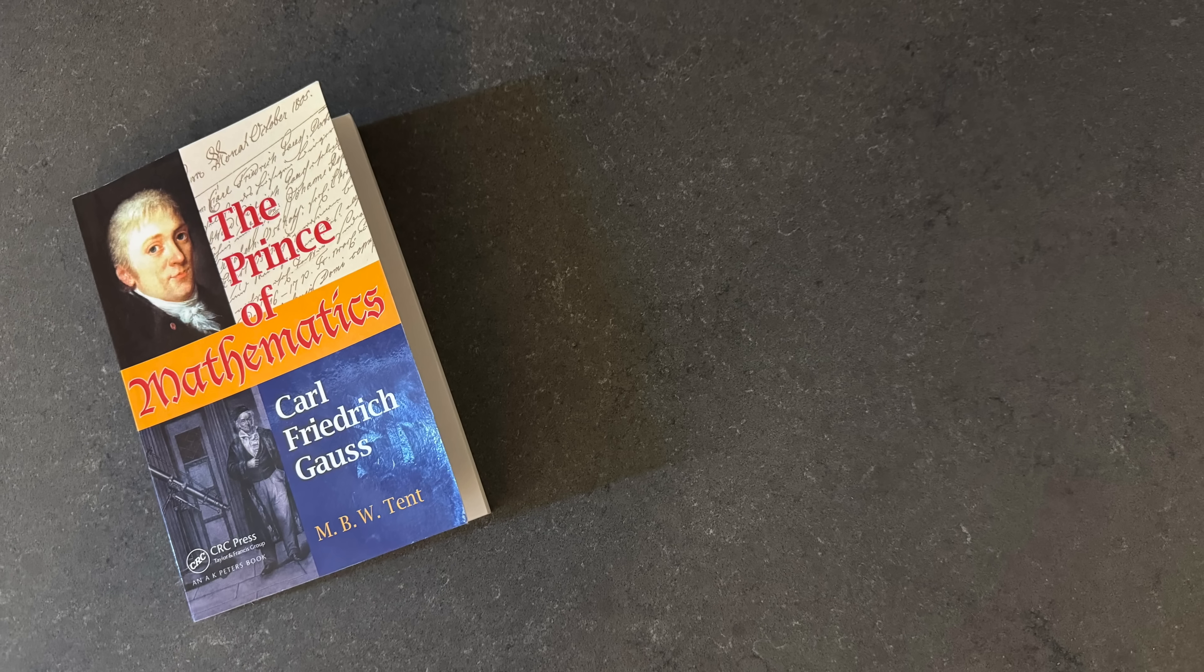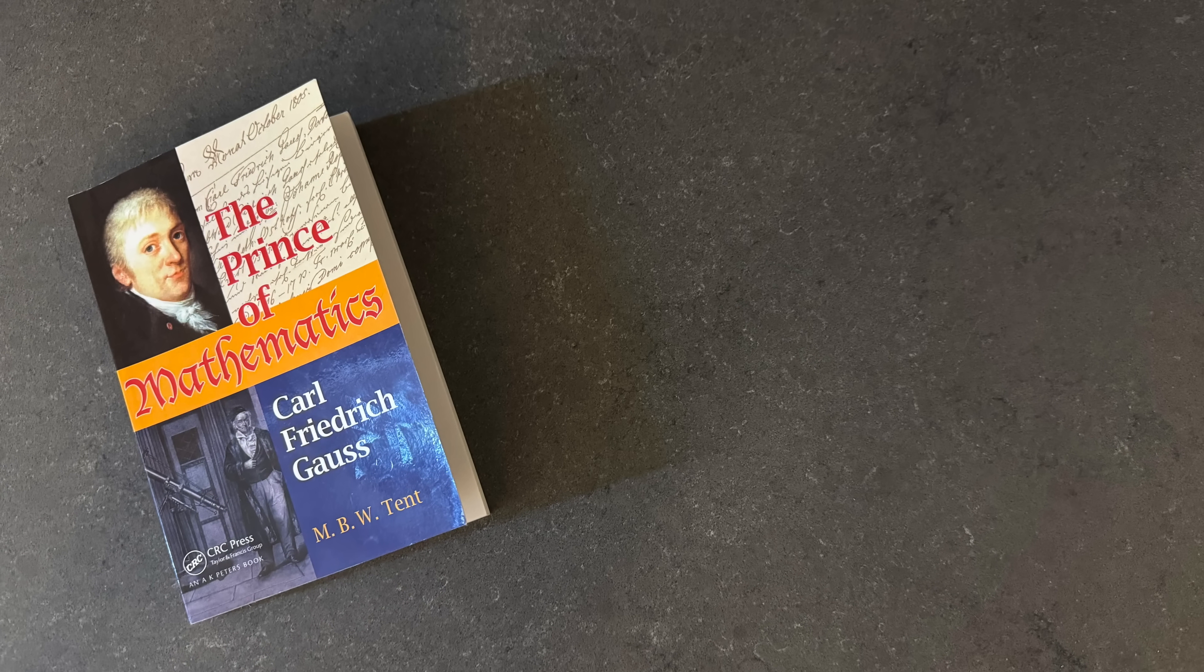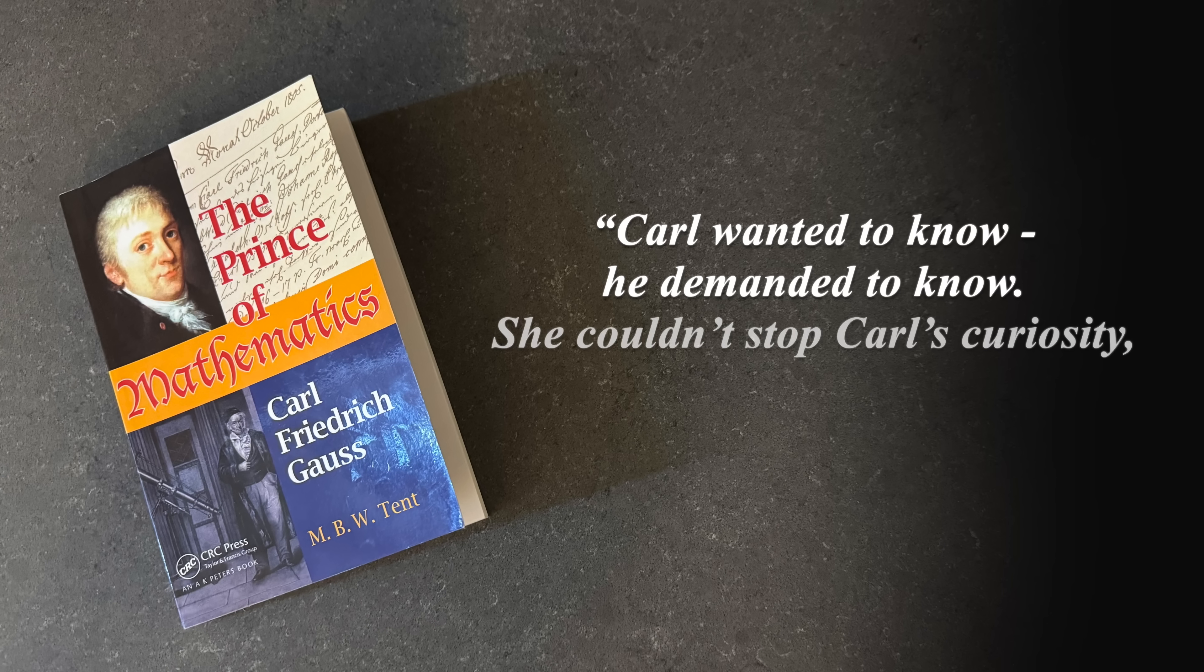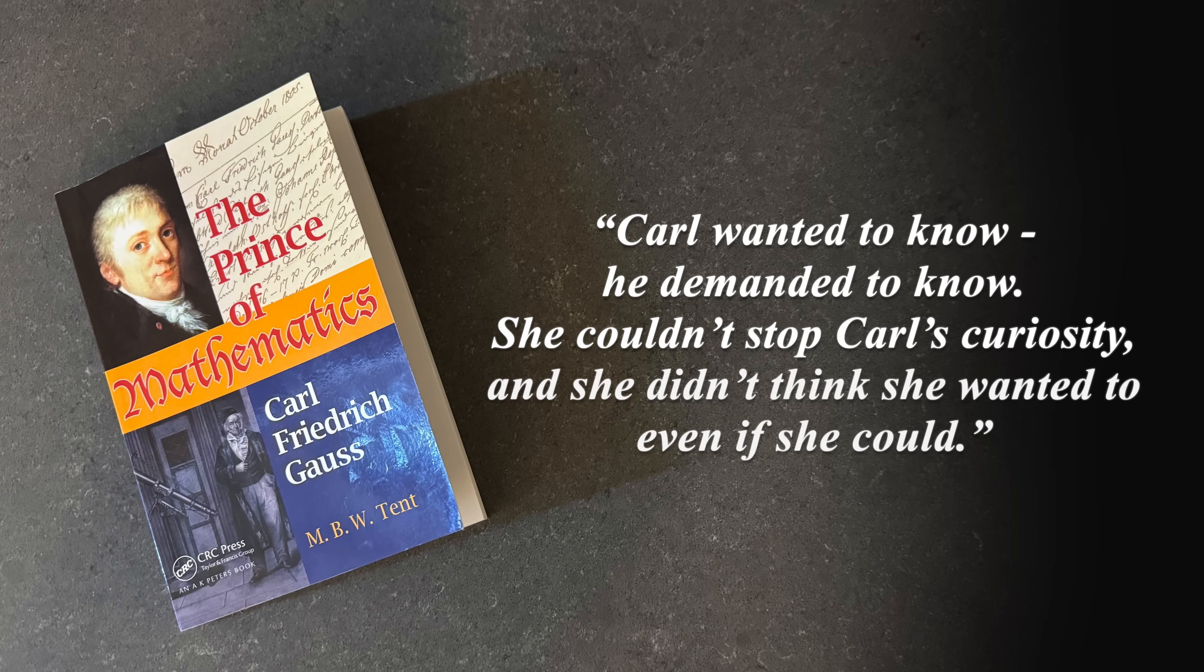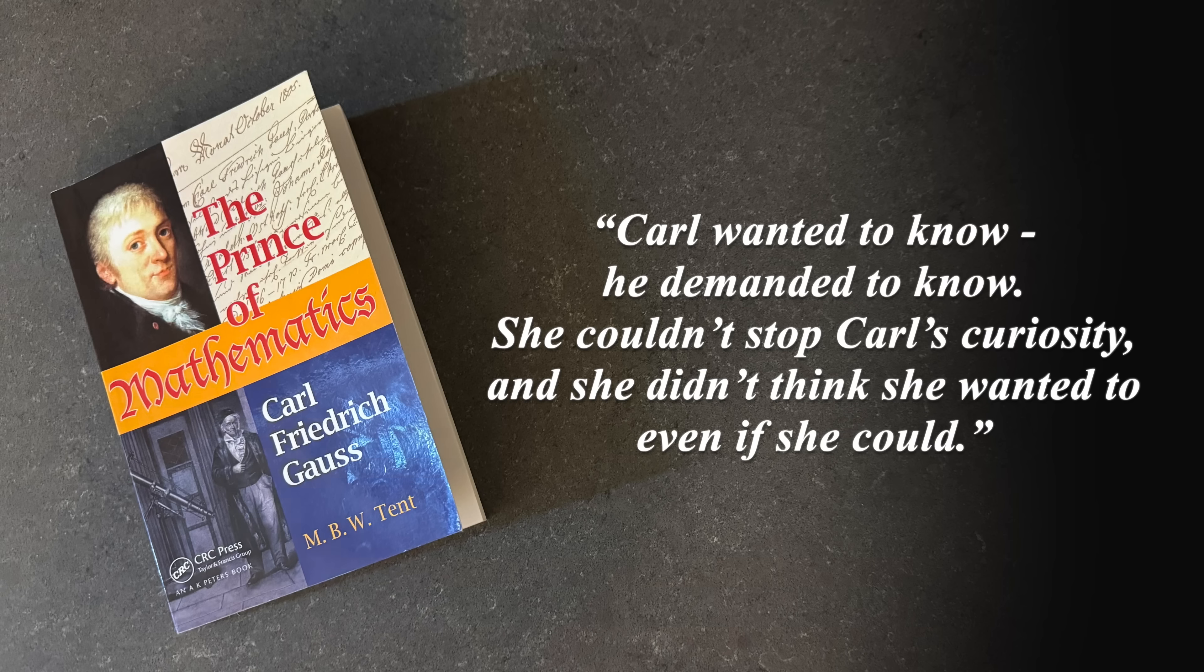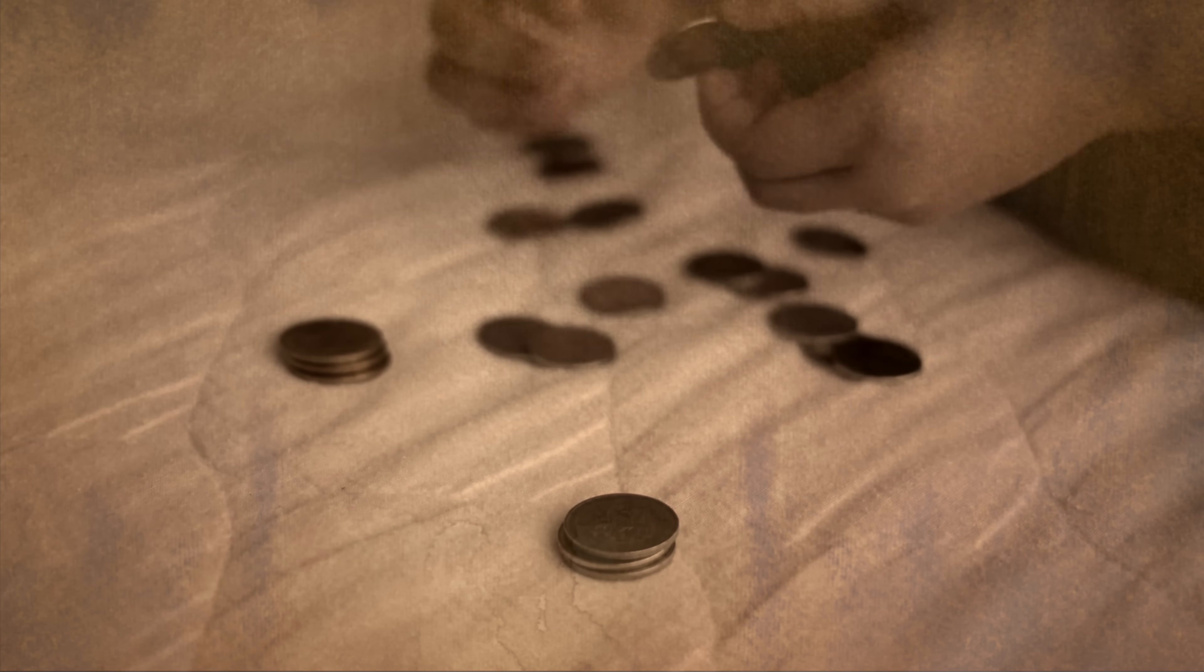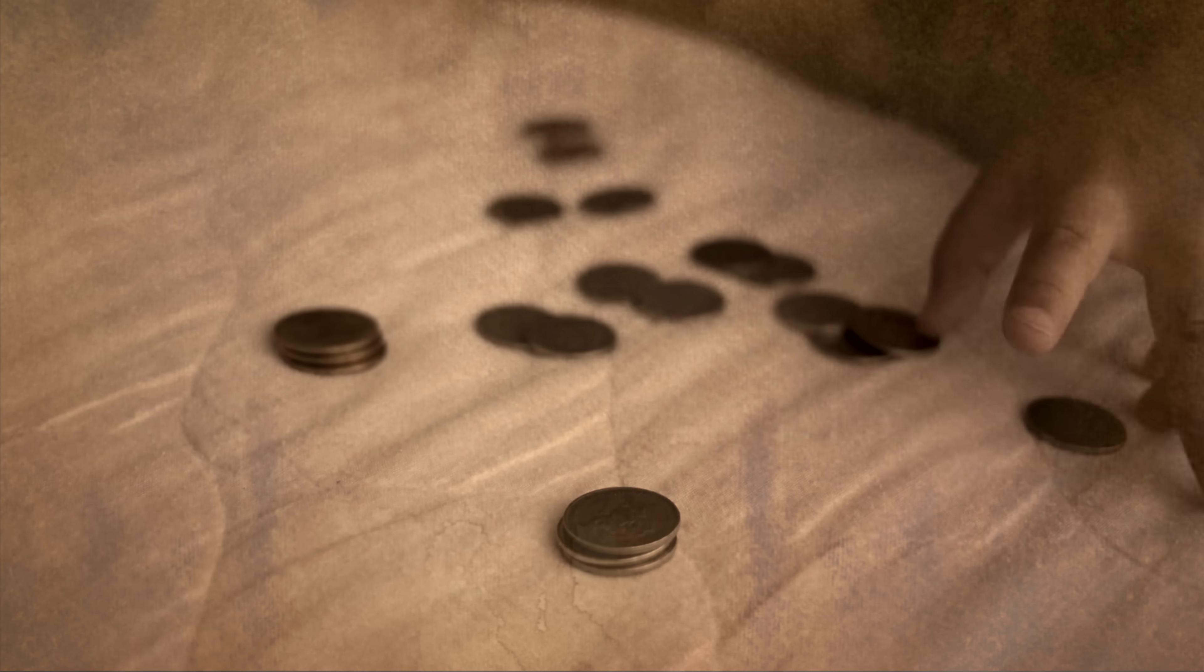As Margaret Tent wrote in her biography of Gauss, The Prince of Mathematics, Carl wanted to know, he demanded to know. She couldn't stop Carl's curiosity, and she didn't think she wanted to, even if she could. At age three, Carl corrected his father, a stonemason, when he made a mistake calculating how much he owed his workers. Numbers fascinated Carl the way toys fascinate other children.